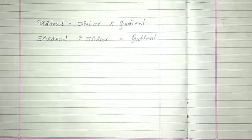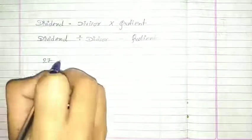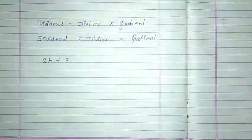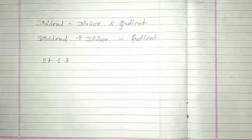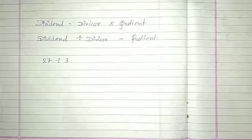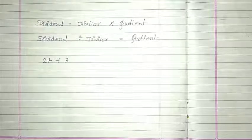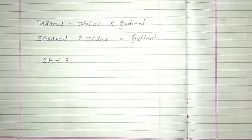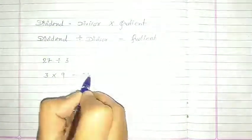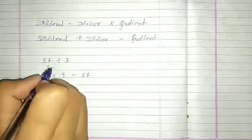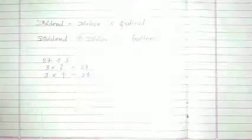So suppose I want to find the quotient of 27 divided by 3. यहाँ पर मेरे पास कोई subtraction method नहीं है, मुझे इसका quotient find out करना है. तो मैं कैसे करूंगी? 3 का table बोलूंगी, जब तक मुझे 27 मिलते हैं. Say the table of 3 till you get 27. 3 nines are 27.